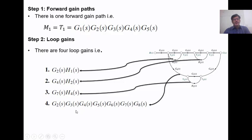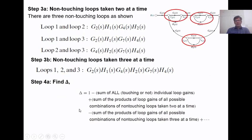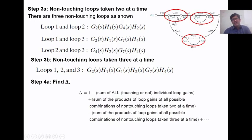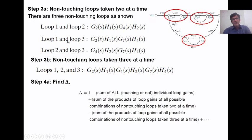Step 3: we find non-touching loops taken two at a time. We identify three loops — loop one, loop two, and loop three — that have no node in common, so they are non-touching. Non-touching loops are those which do not share any node. We take combinations: loop one and two (g2·h1 and g4·h2), loop one and three, and loop two and three, and write their respective gains.